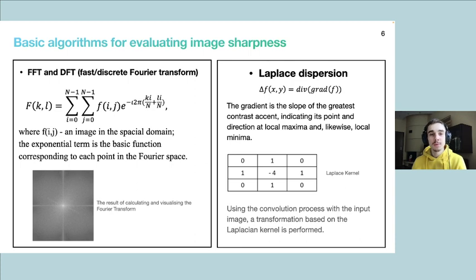If we want to evaluate the sharpness of an image, we can use the basic mathematical approaches to do so. For example, we can use the Fast Fourier Transform approach and analyze the spatial domain of the image, or we could use the Laplace dispersion approach and iterate over image blocks to detect edge contrasts.